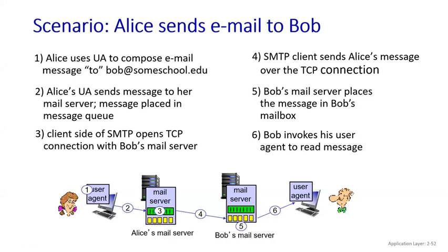The next step is that the client has to open the SMTP connection using a TCP connection, because now we are sending the message from one mail server to another. This is Alice's mail server and this is Bob's mail server. When the message goes from Alice's mail server to Bob's mail server, Alice's mail server acts as a client. The composed message is now inside the green color box — the message queue.